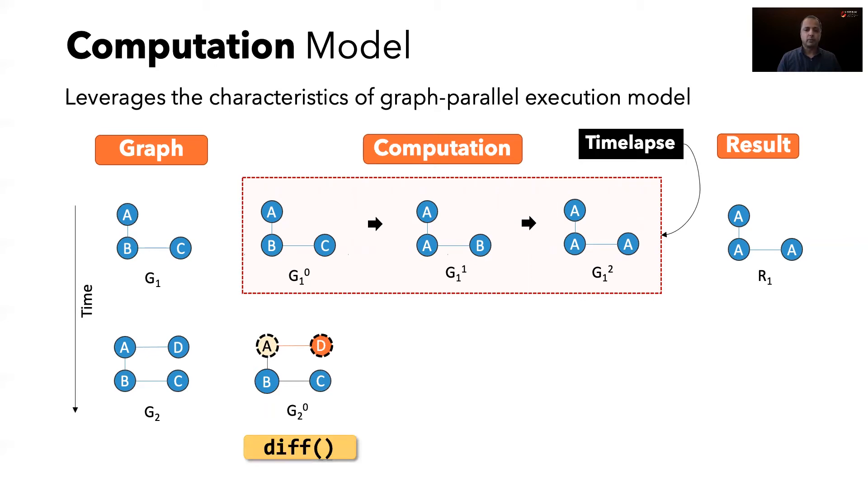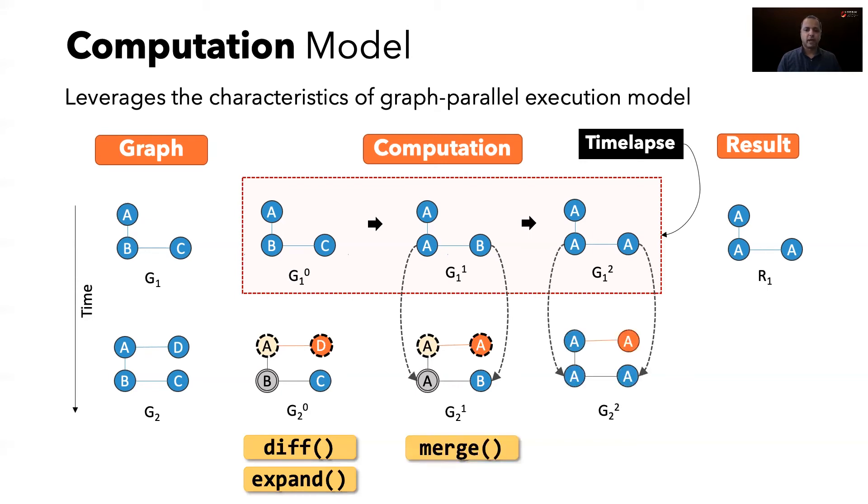For A to recompute the correct value, we also need its neighbor B. Time-lapse provides the expand API for this purpose. Once A and B have recomputed, B and C can simply copy their state from the time-lapse using the merge API. The process of diff, expand, and merge continues at every iteration until we get the final answer.